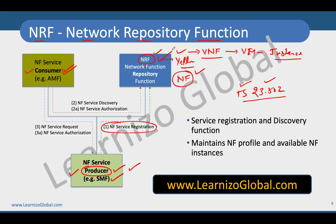Whenever there is a consumer looking to consume some kind of services, it typically sends a service discovery message to the NRF. In return, the NRF provides information about the relevant network service producers, which is then received by the consumer.